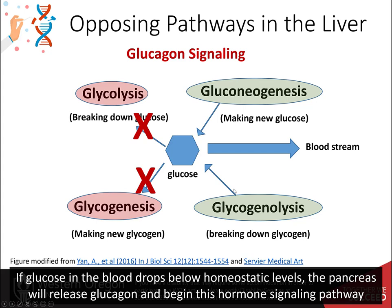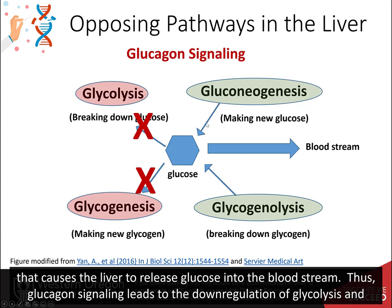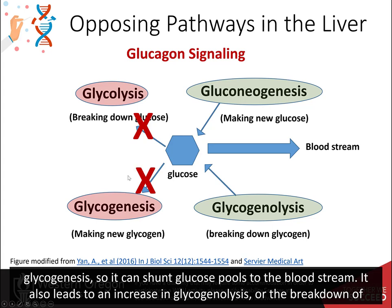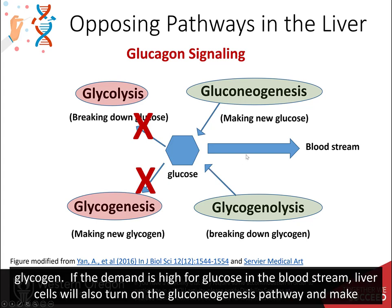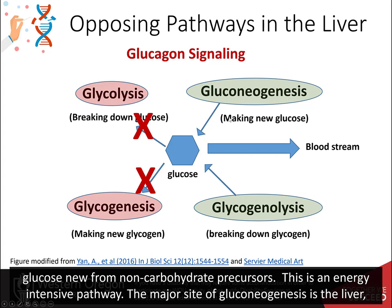If glucose in the bloodstream drops below homeostatic levels, the pancreas will release glucagon and begin this hormone signaling pathway that causes the liver to release glucose into the bloodstream. Thus, glucagon signaling leads to the downregulation of glycolysis and glycogenesis, so it can shunt glucose pools to the bloodstream. It also leads to an increase in glycogenolysis, or the breakdown of glycogen. If the demand is high enough for glucose, liver cells will also turn on gluconeogenesis pathways and make glucose from non-carbohydrate precursors.